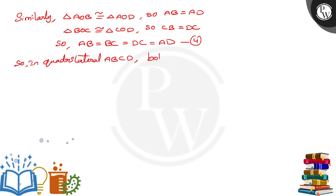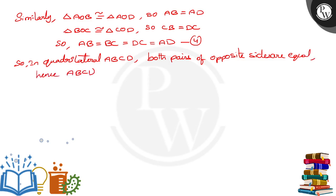In quadrilateral ABCD, both pairs of opposite sides are equal. Hence ABCD is a parallelogram. So we have established that it is a parallelogram.